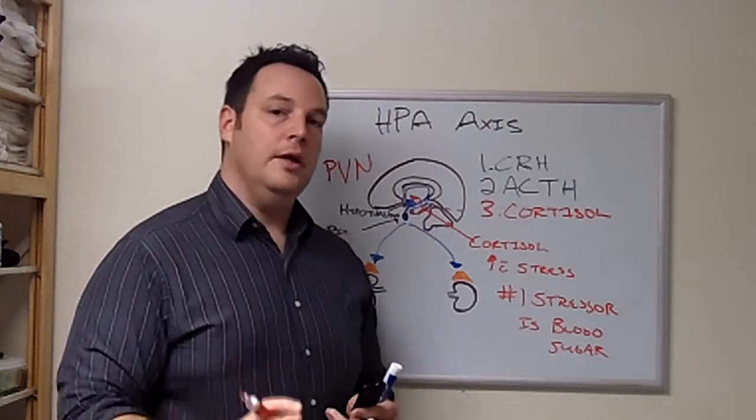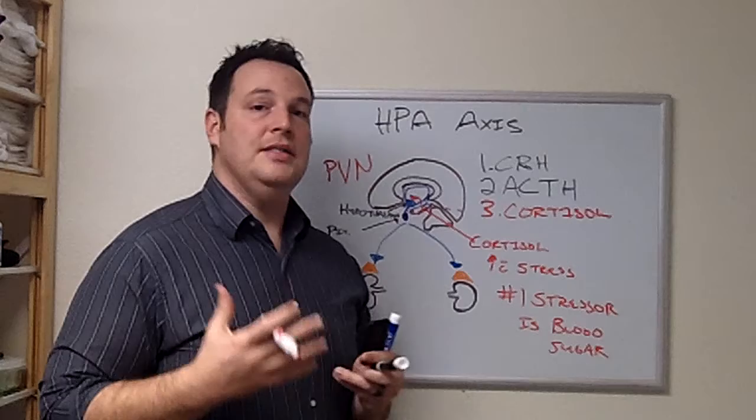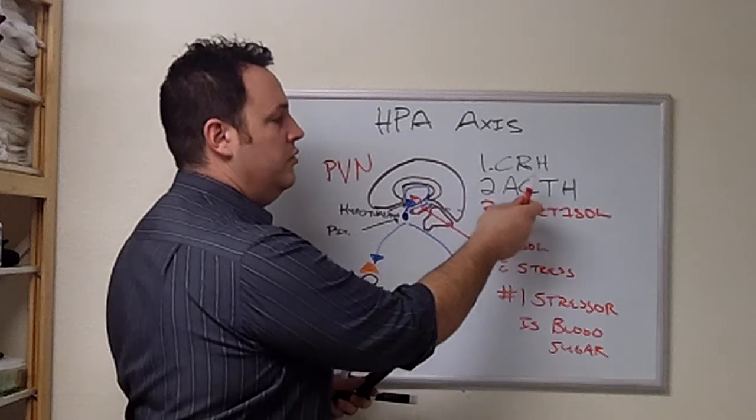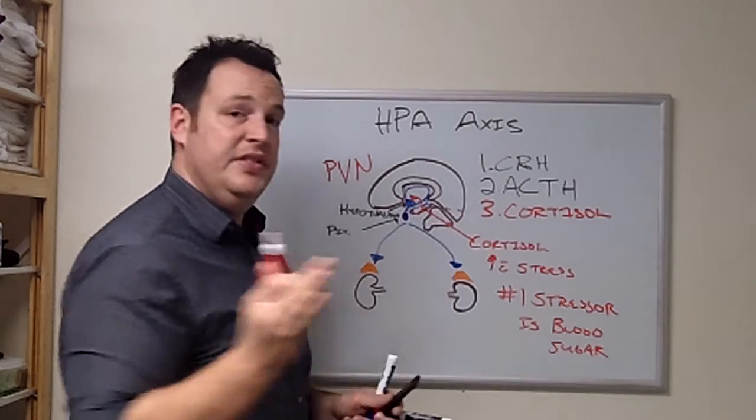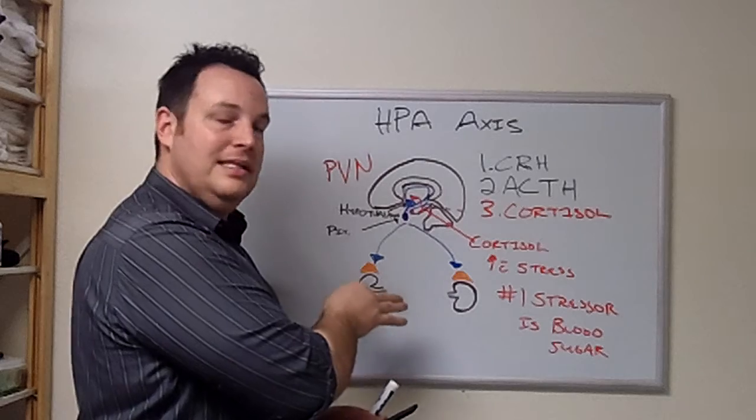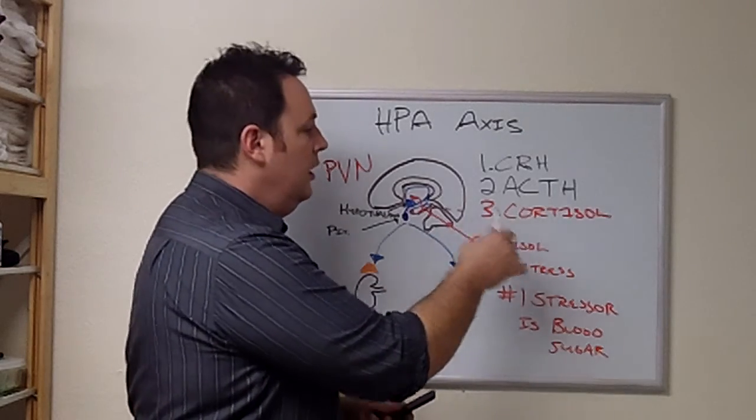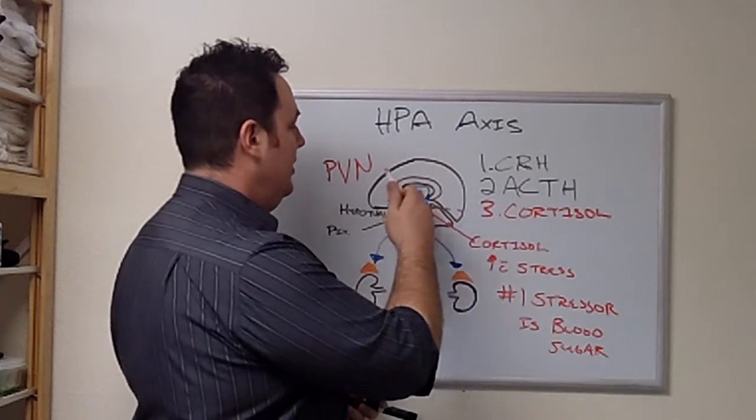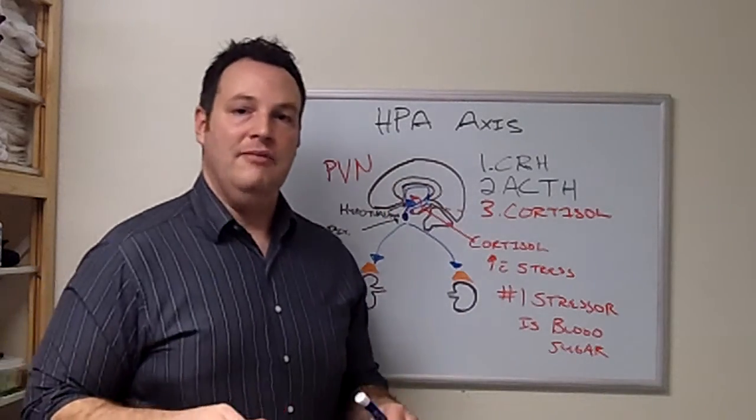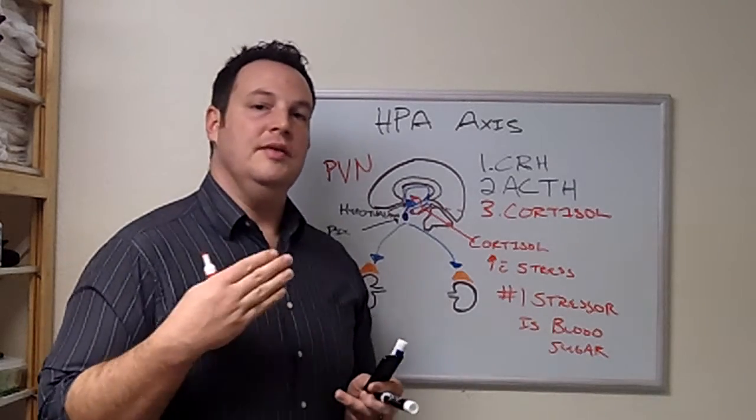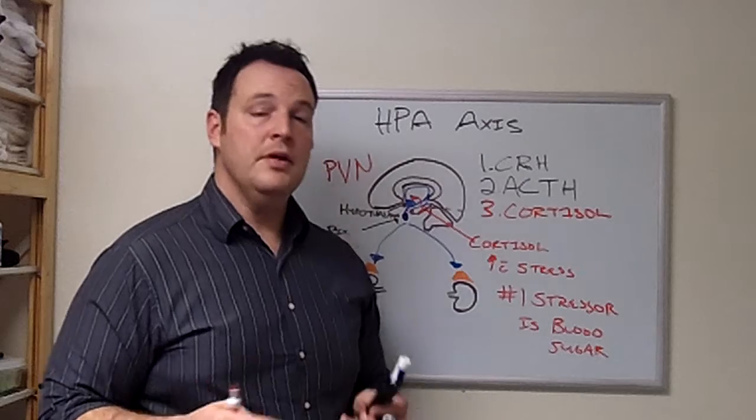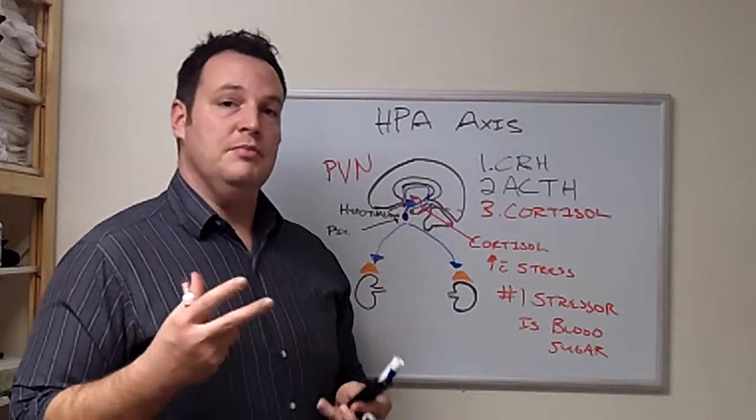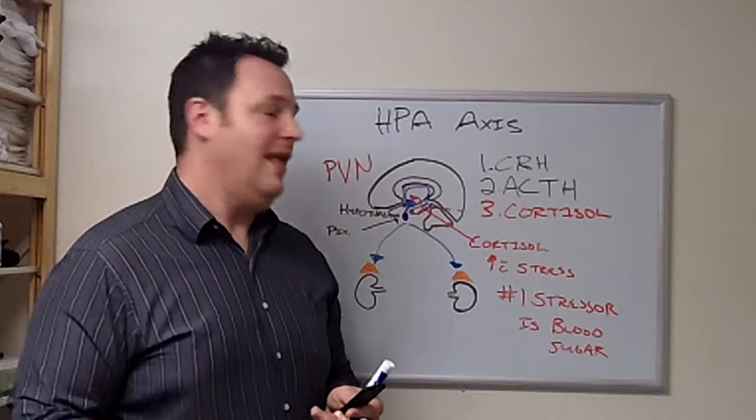The hypothalamus releases corticotrophic releasing hormone, which talks to the anterior pituitary. Anterior pituitary produces adrenal corticotrophic releasing hormone. This stimulates the adrenal glands, small glands that sit on top of the kidney, to produce cortisol. Cortisol works on a negative feedback mechanism. Too much of it is going to shut down hypothalamic function. So now we start seeing heart rate issues, respiration issues, blood pressure issues, and temperature control issues because too much cortisol is burning out that hypothalamus. We start seeing thyroid issues with that.